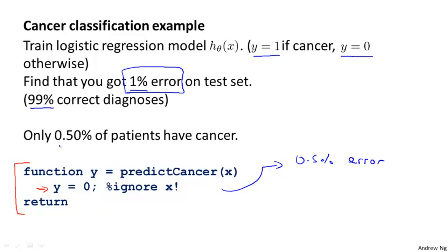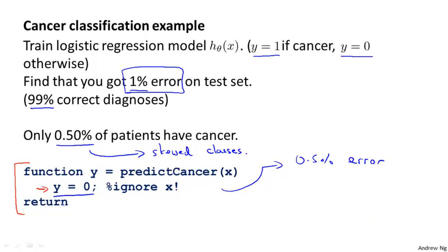The setting where the ratio of positive to negative examples is very close to one of the two extremes — where the number of positive examples is much, much smaller than the number of negative examples because y equals 1 so rarely — this is what we call the case of skewed classes. We just have a lot more examples from one class than from the other class, and by predicting y equals 0 all the time, or maybe y equals 1 all the time, an algorithm can do pretty well.